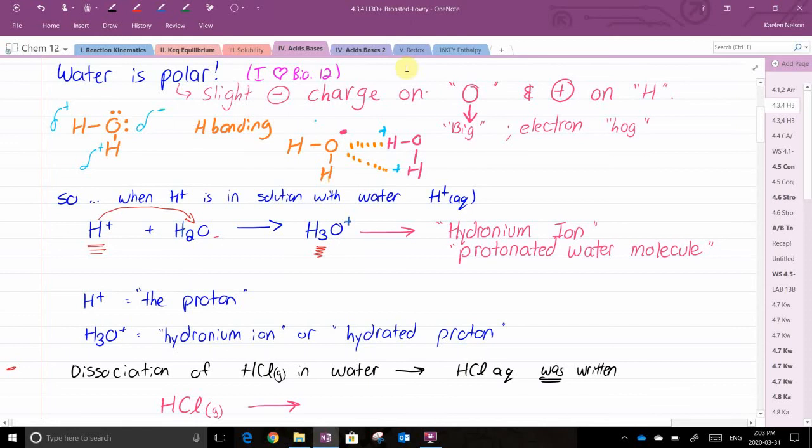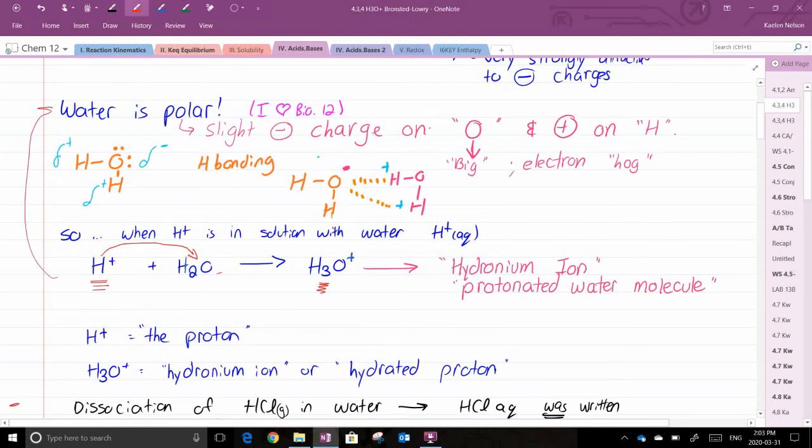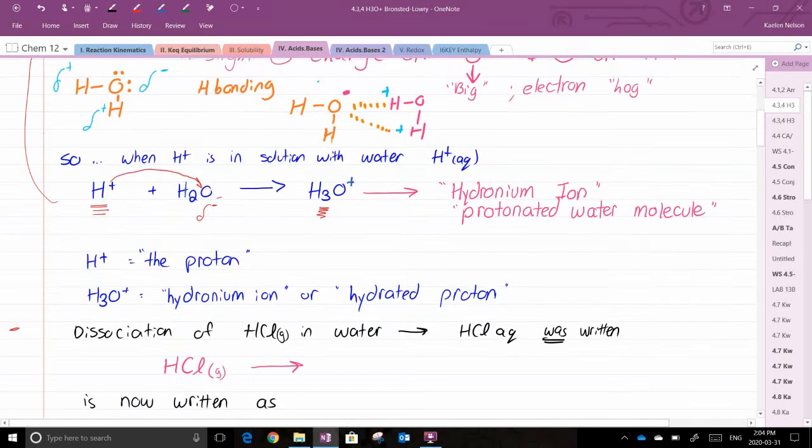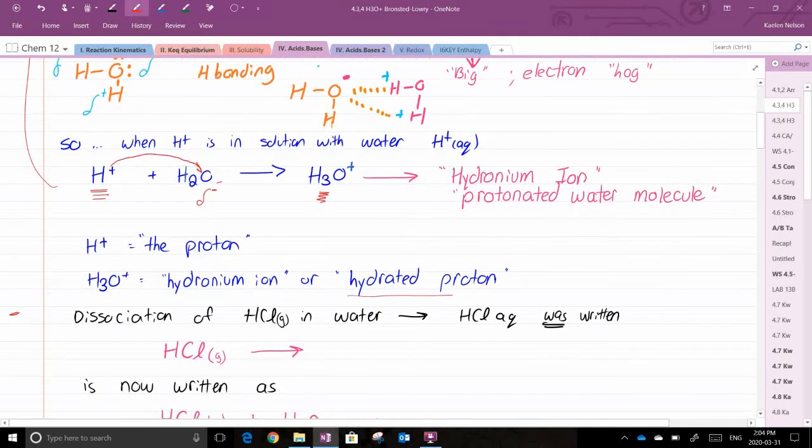The reason for this is because water is polar. Polar means it has a slight negative charge on the oxygen and a slight positive charge on the H. That positive charge is attracted to the negative on the oxygen. So the H+ is positive, so it's going to want to stick onto that negative of the O. This is called a hydronium ion or a protonated water molecule or a hydrated proton.